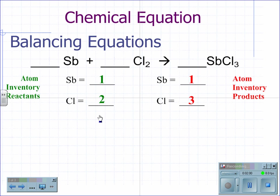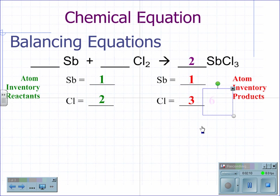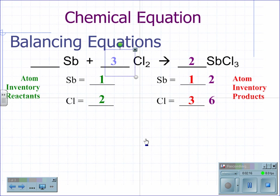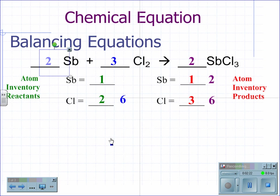Again, we see that chlorine two and chlorine three have a common multiple at six. If we change the antimony chloride to a coefficient of two, this changes chlorine to six and antimony to two. We can then put a three as the coefficient in front of chlorine, giving us six chlorine atoms, and a two in front of the antimony, giving it two antimony atoms.